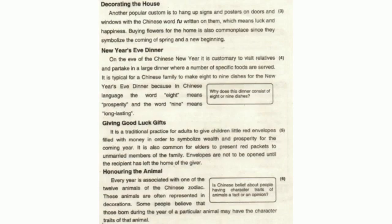It is typical for a Chinese family to make eight to nine dishes for the New Year's Eve dinner, because in the Chinese language the word 'eight' means prosperity and the word 'nine' means long-lasting. Urdu: Rawayati taur par ek chini khandan Saal-e-No ke sham ke khane mein aath ya nau khane lagata hai, kyunke chini zubaan mein lafaz 'aath' ka matlab khushali aur 'nau' ka matlab dair tak rehna hai.